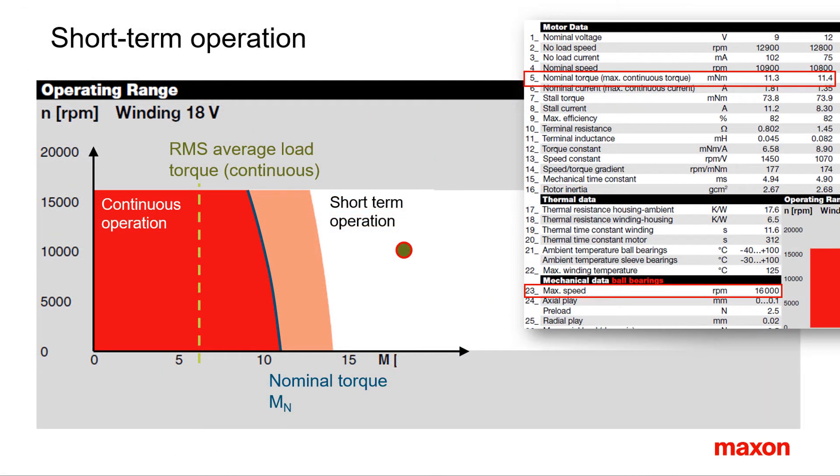Higher torques than nominal are possible, but only a limited amount of time. How long an overload situation may last depends on the amount of overload torque and the motor type. As a rule, the larger the motor, the longer the overload can be.